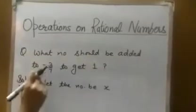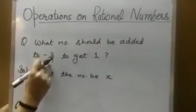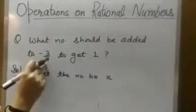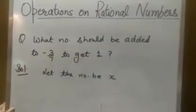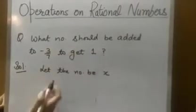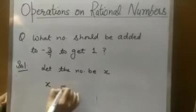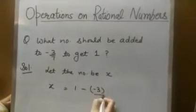First, what number should be added to 4 to get 7? What number should be added to 4 to get 7? I know the result is 3. What we did? We subtract 4 from 7. So you can find out directly the value of X from here.